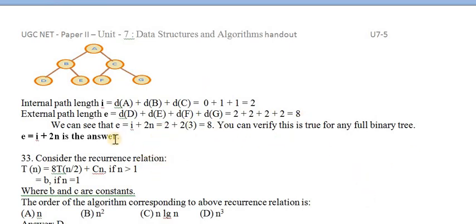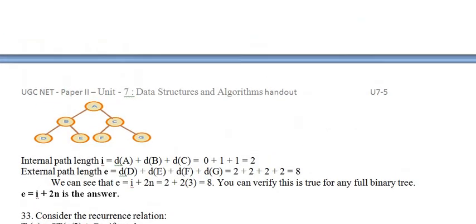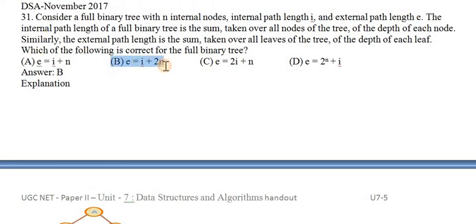Adding all up, we can see that E = I + 2N, where N is the number of internal nodes (A, B, C = 3). Checking: E = 8, I = 2, and 2 + 2×3 = 2 + 6 = 8. Confirmed. So the formula for a full binary tree is E = I + 2N, which is option B.